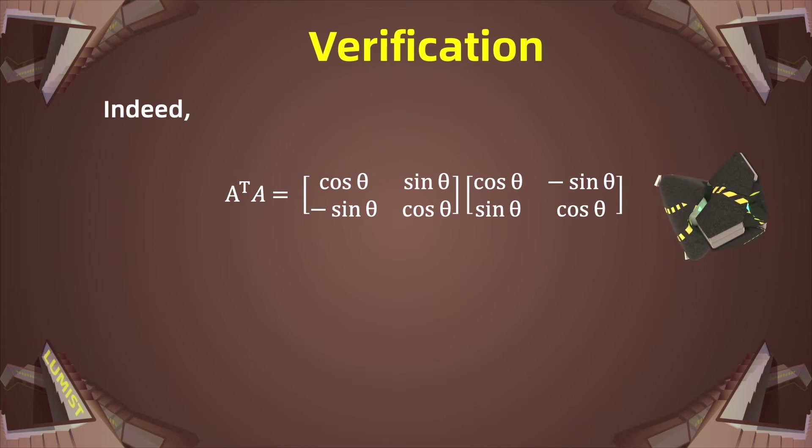Here we have the transpose matrix of A and we're multiplying that matrix by A itself. After we multiply these two matrices, it is easy to see that we obtain the identity matrix of dimensions 2 times 2. Therefore, A is an orthogonal matrix.